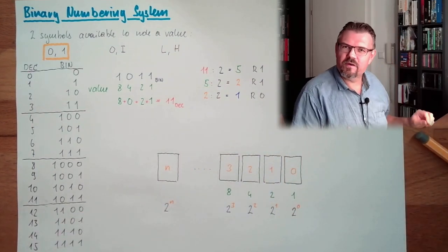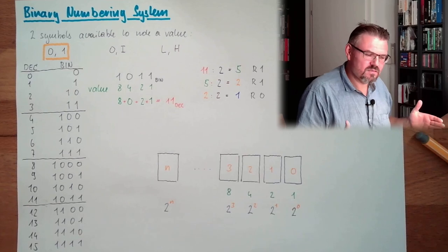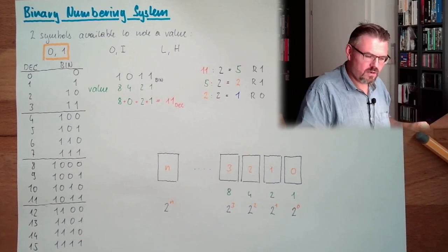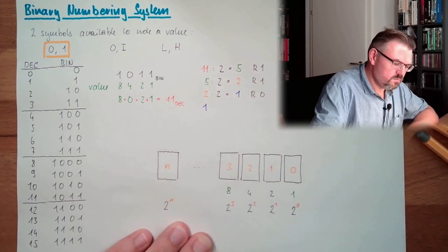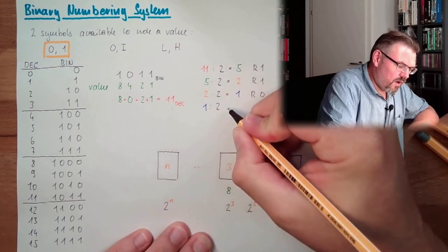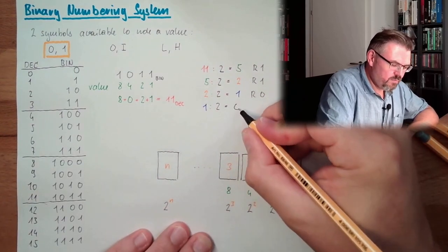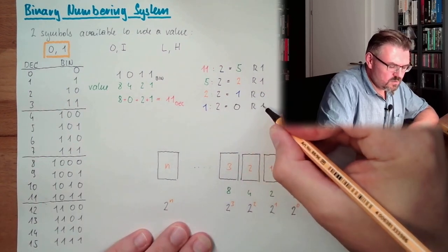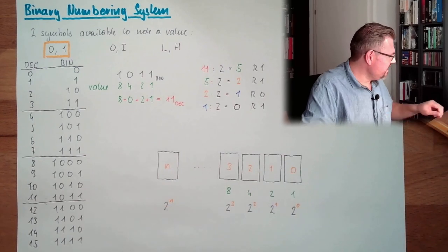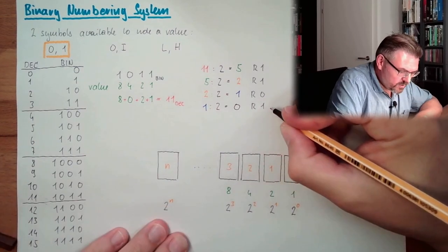I'm not sure, in German we call it rest, the rest of the division. I think in English it's remainder. And then we have 1 divided by 2, and now this indicates we are at the end, because this is 0 times. However, there is still a remainder, this is 1. And then we are reading this upside down, in this direction.